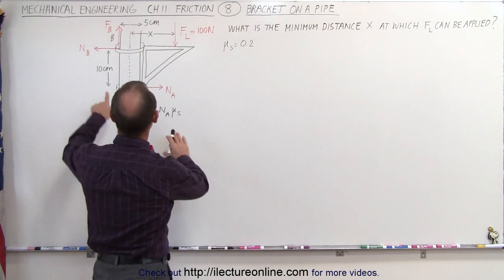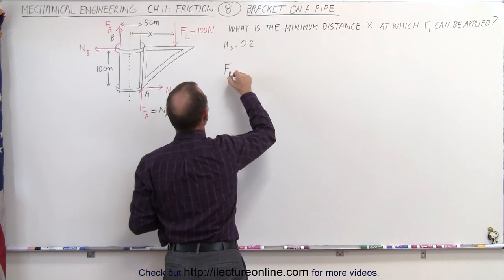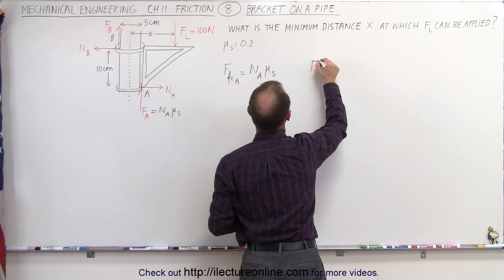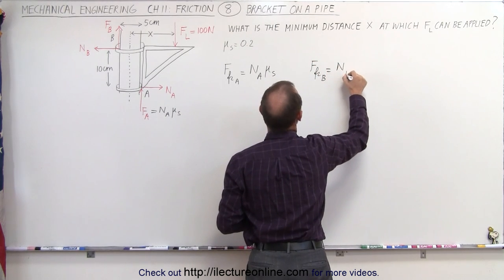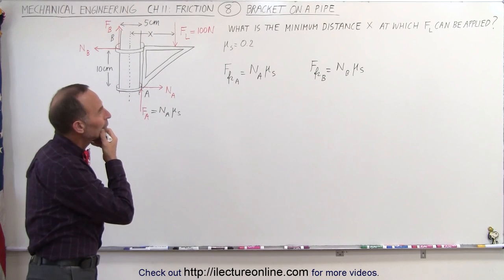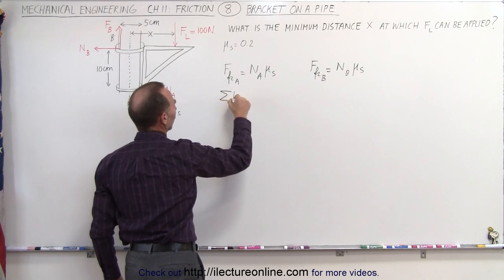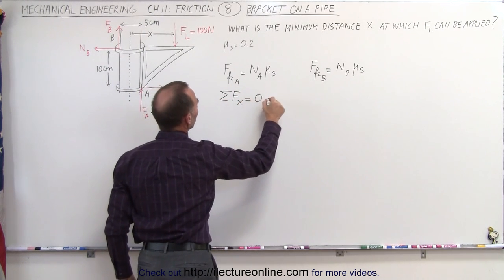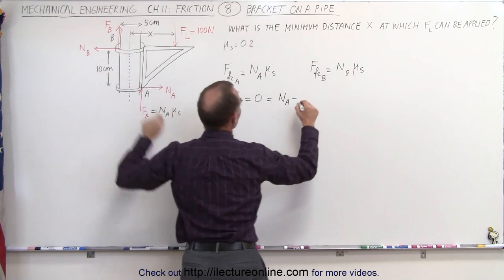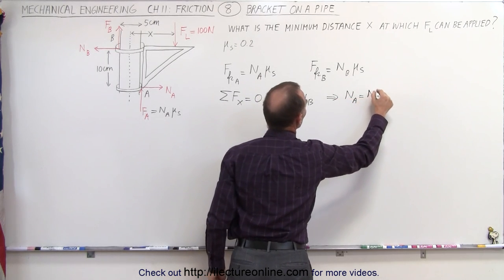We're going to start by figuring out the normal forces here at the two brackets. We do that by saying that the friction force at A is defined as the normal force at A times the coefficient of friction. We can also say that the friction force at B is going to be equal to the normal force at B times the coefficient of static friction. Now, the only forces acting in the x-direction are these two forces right here. So we can say that the sum of the forces in the x-direction must add up to zero, which gives us N_A minus N_B equals zero. So we can conclude that the normal force at A equals the normal force at B.